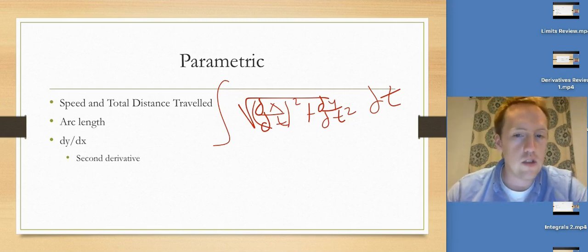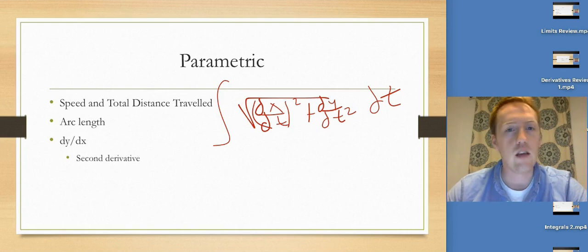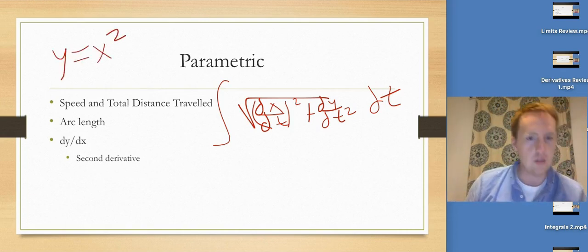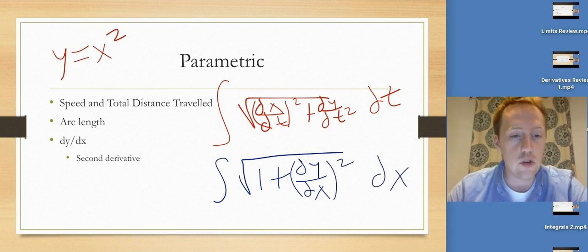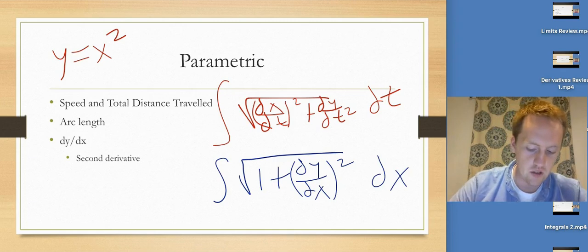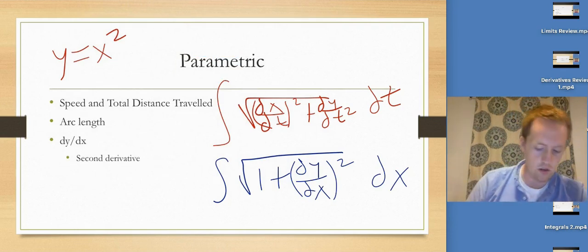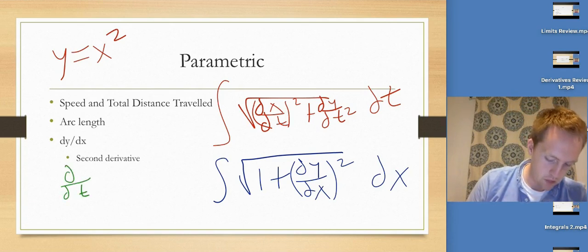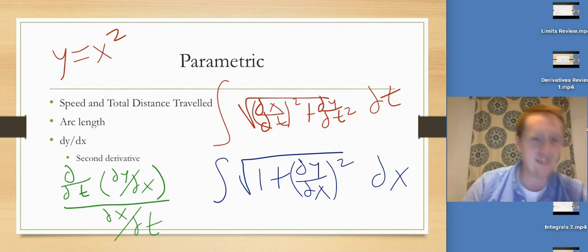Arc length is basically total distance traveled. You could do it as written, or if they give you y equals something of x — like y equals x squared — the arc length is the integral of the square root of 1 + (dy/dx)² dx. And dy/dx is just dy/dt over dx/dt. The second derivative gets a little funky — you take the derivative again with respect to t and divide by dx/dt: it's d/dt of (dy/dx), divided by dx/dt.